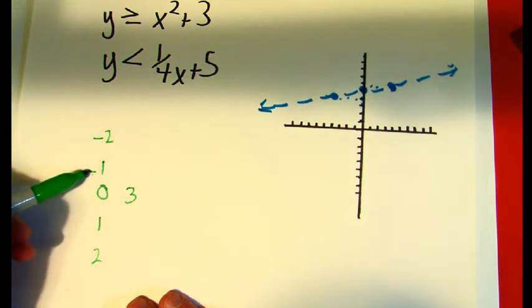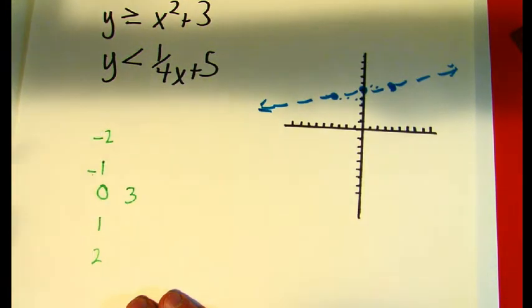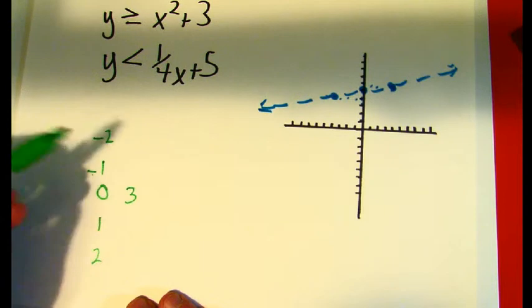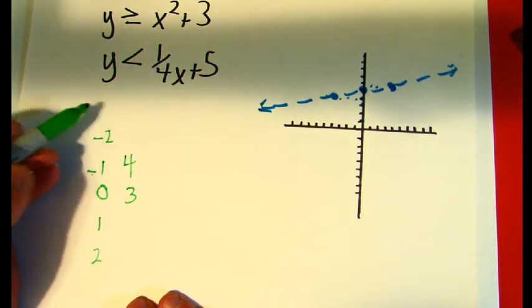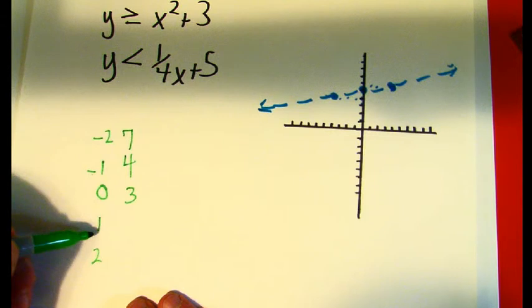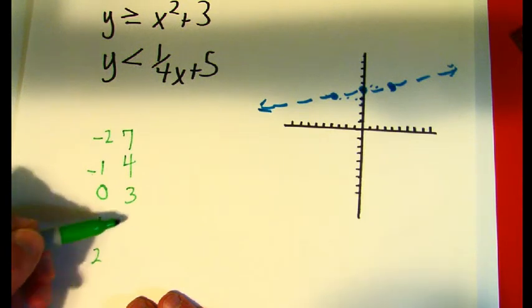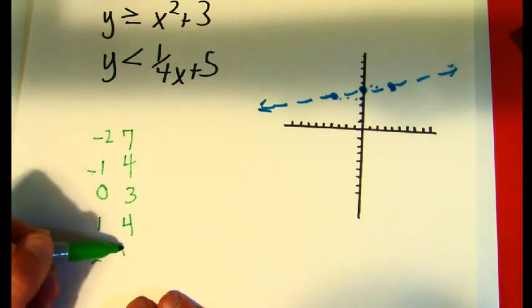If I did negative 1, negative 1 squared, as long as it's in parentheses, is 1, so you get 4. And negative 2 would give you 4 plus 3, so you'd end up at 7. On the other side, I'm going to deal with the same things, so it would be 4 and 7.